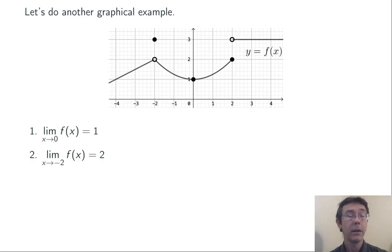In this case, the limit is different than the value of the function. f of negative 2 is 3, but the limit as x goes to negative 2 of f(x) is 2. These are different questions, and the quantities that we get at the end are frequently different.